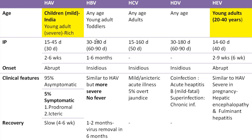Incubation period: hepatitis A and E is 15–60 days, while hepatitis B, C, and D is approximately 30–180 days. Regarding onset, hepatitis A and E always cause acute hepatitis with abrupt onset, while B, C, and D tend to have insidious onset. For clinical features, 95% of hepatitis A infections are asymptomatic.